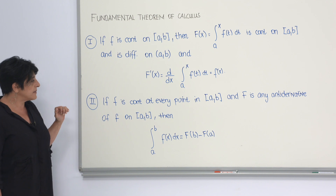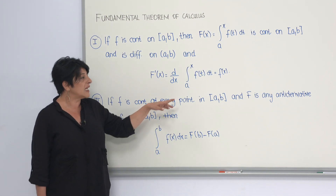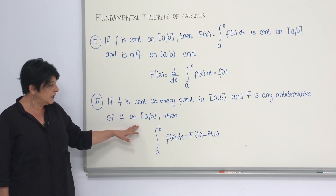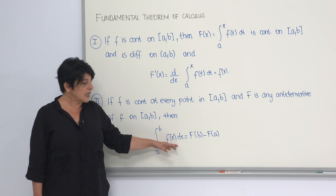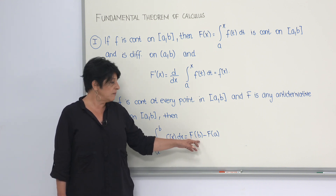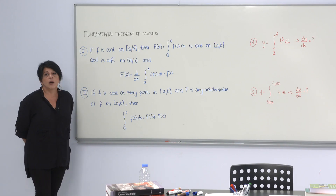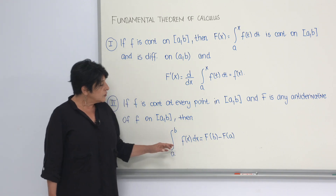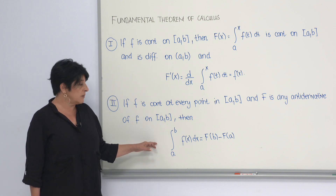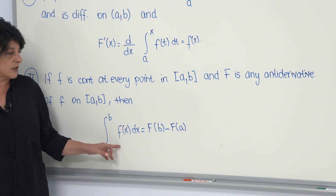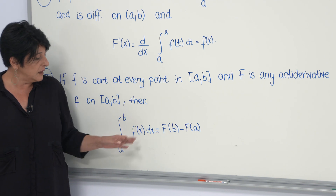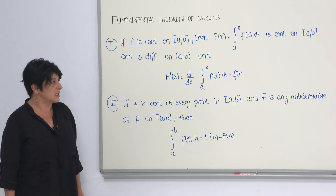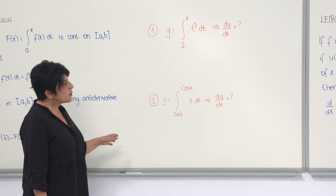The second part of the theorem says that if f is continuous at every point in the closed interval [a, b], and if F is any antiderivative of f on this interval, then the integral from a to b of f(x) dx equals F(b) minus F(a). To evaluate a definite integral, we no longer need Riemann sums. If we know an antiderivative of the integrand, we can evaluate it at the limits and take the difference — much quicker and easier. Let's work through several examples.